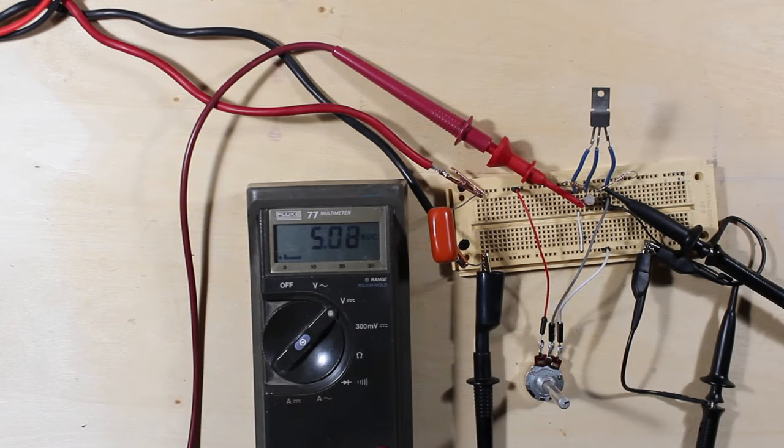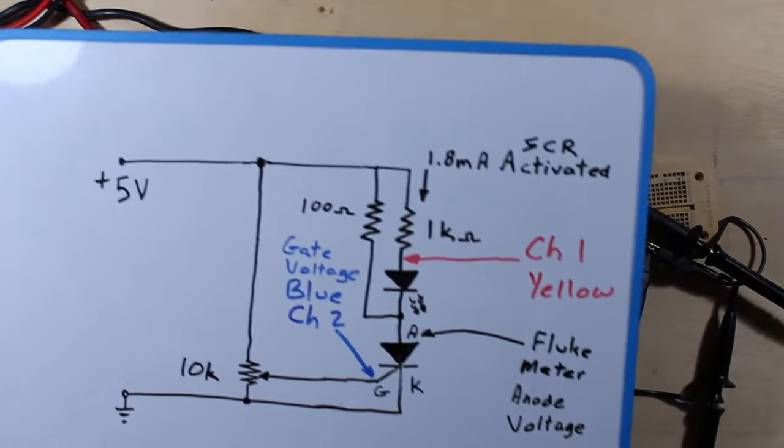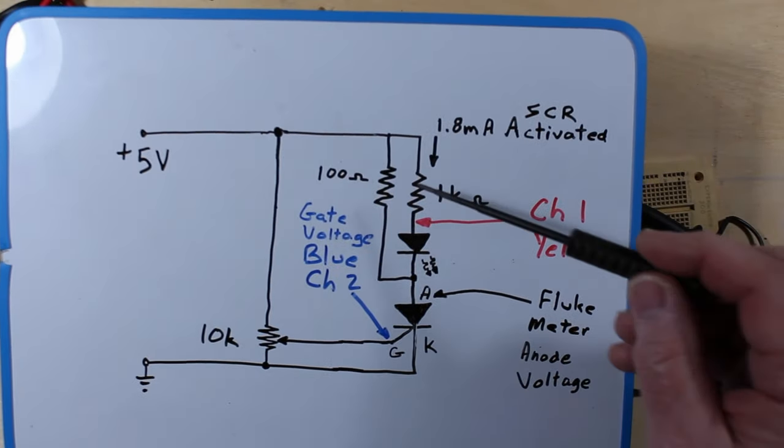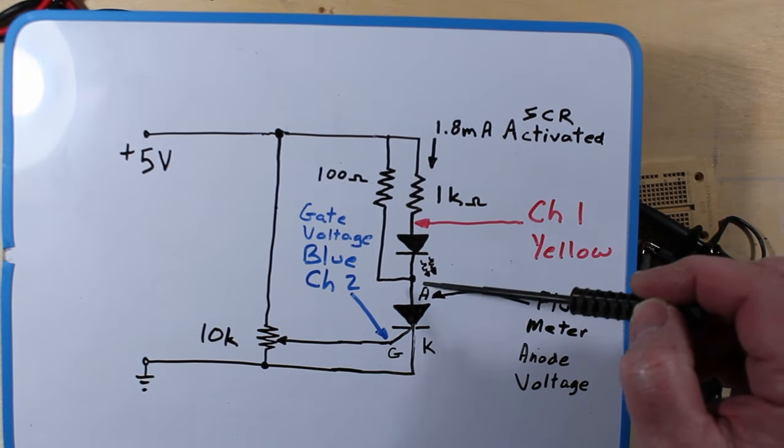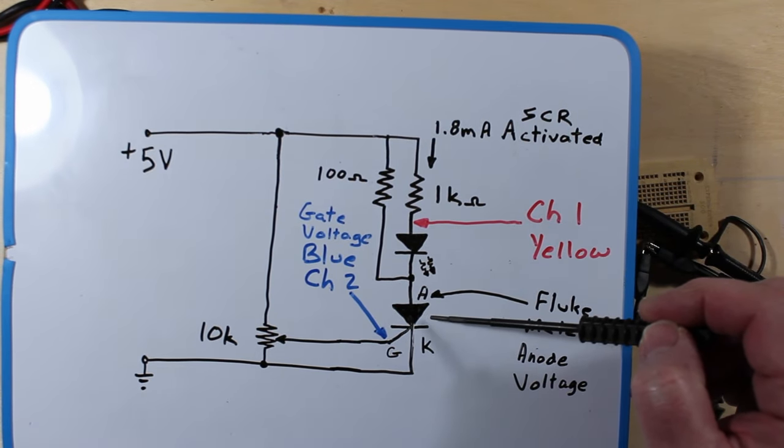So I've modified our circuit slightly. I've put a 100 ohm resistor in here. You can see it goes from the 5 volts down to the anode of the SCR.